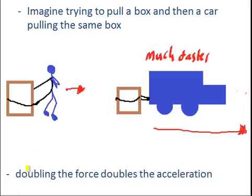So this is how we get to the start of our equation because doubling the force doubles the acceleration. The two are directly proportional.